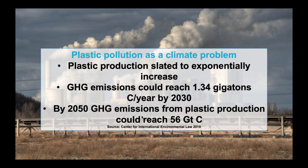A 2019 report explored the inherent link between plastics and climate change, showing that plastic production and use emits greenhouse gases at every stage. If plastic production and use grow as currently planned, by 2030 the production of plastic could be releasing emissions equivalent to more than 295 new 500-megawatt coal-fired power plants. The report also suggested that emissions related to plastic production could reach 10 to 13 percent of the global carbon budget by 2050.